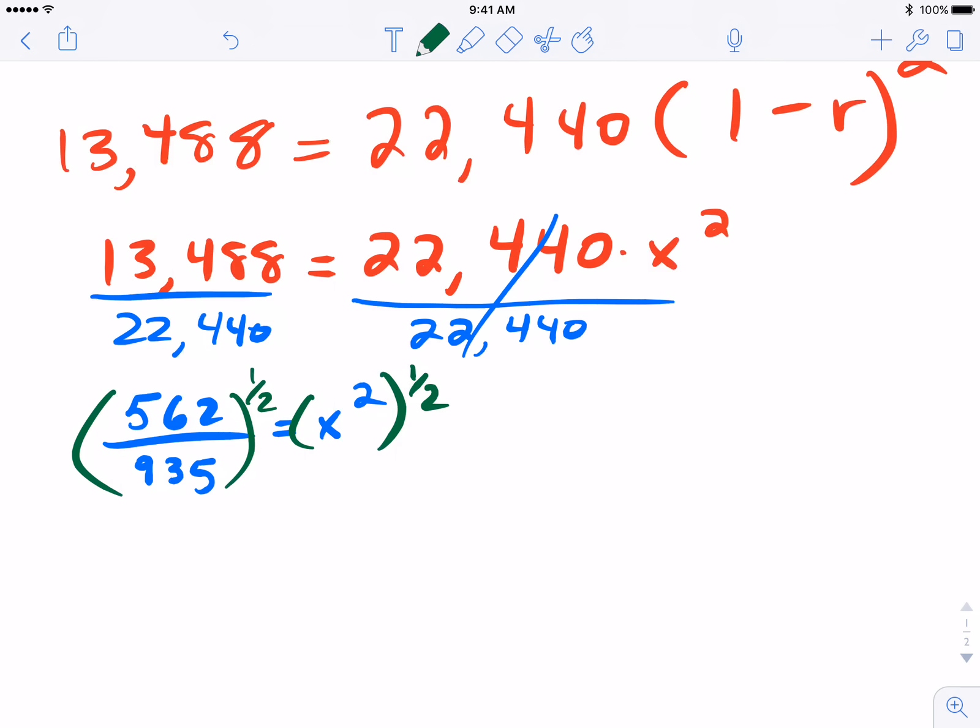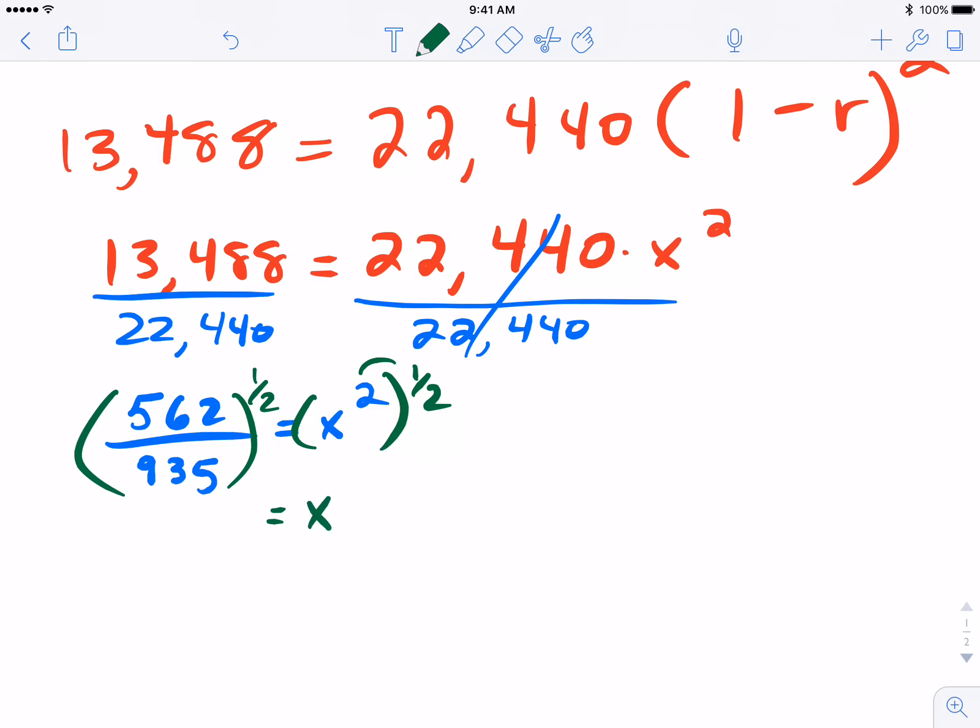This applies for any exponent. If it was x to the fourth we would simply raise it to the one-fourth power because anything times its reciprocal, using our exponent rule, 2 times 1/2 is simply 1 or x. Same thing if we have x to the fourth, by raising it to the one-fourth power we would just be left with x. On the left hand side we're going to raise that to the one-half power and it's going to be something like 0.7752867.